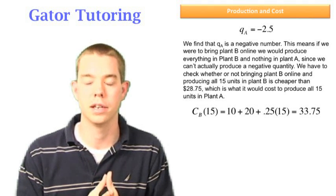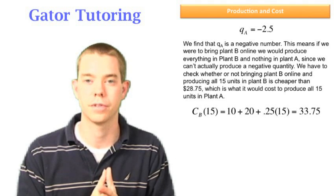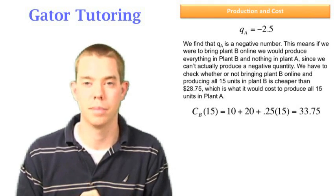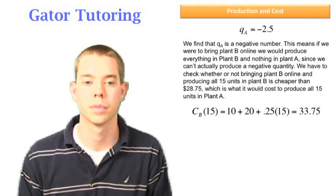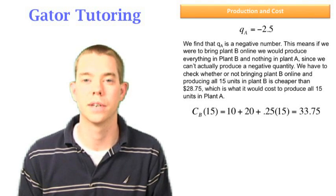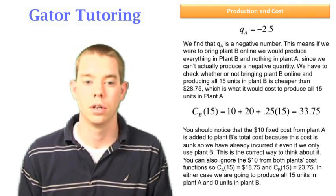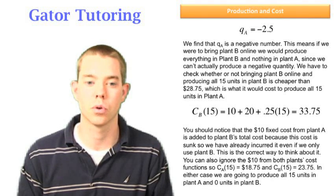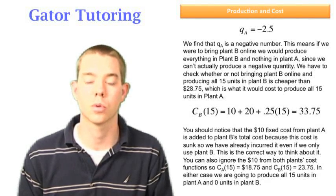The reason is because no matter what we're incurring that cost. If we were to add it to plant A's total cost function, that fixed component of $10, we must also add it to plant B's total cost function. We see that gives us $33.75. You want to notice that $10 fixed cost from plant A is added to plant B's total cost because this cost is sunk, so we have already incurred it even if we only use plant B.